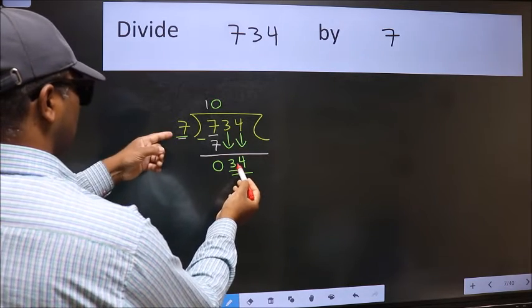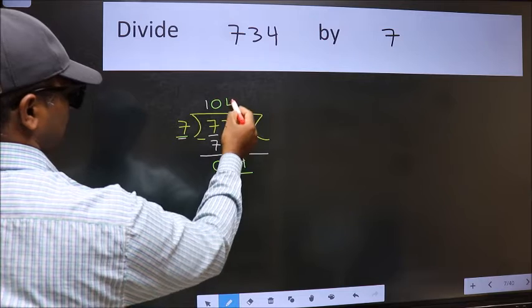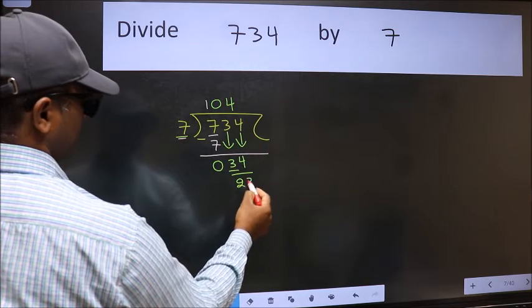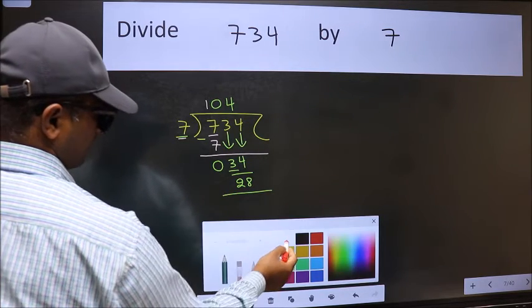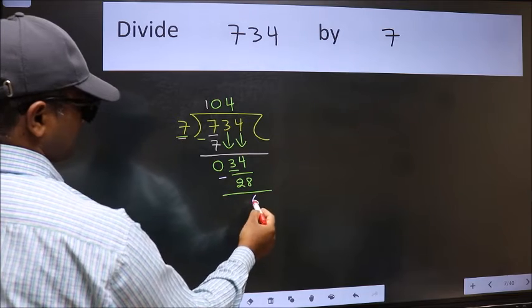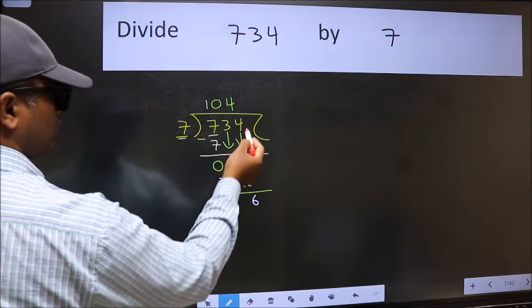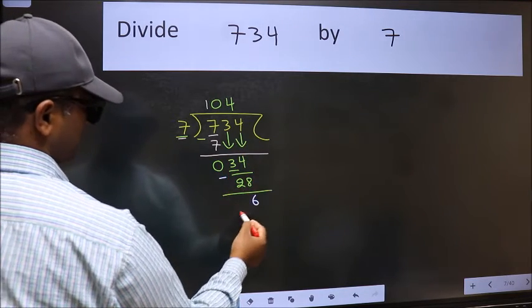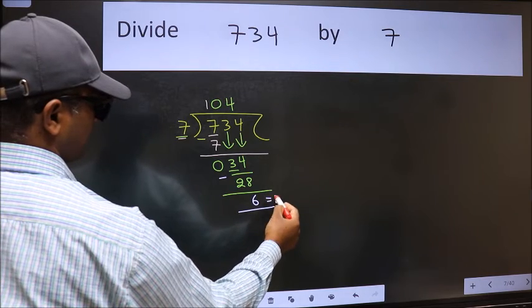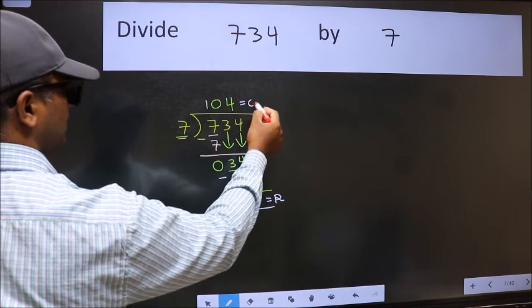Now 34. A number close to 34 in the 7 table is 7 fours 28. Now we should subtract. We get 6. No more numbers to bring it down, so we stop here. This is our remainder and this is our quotient.